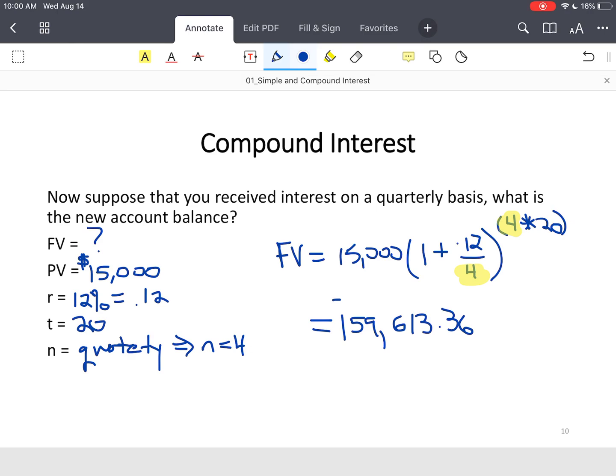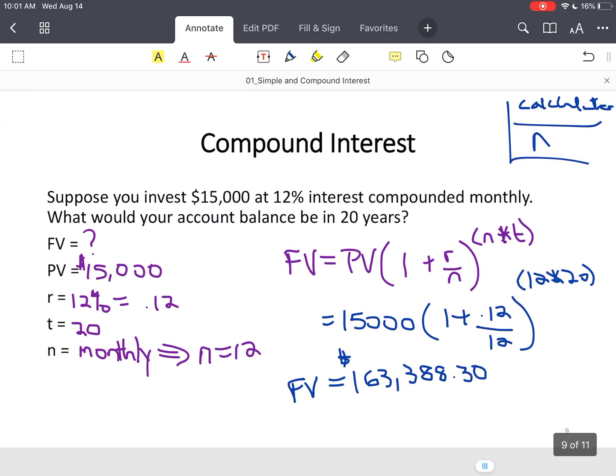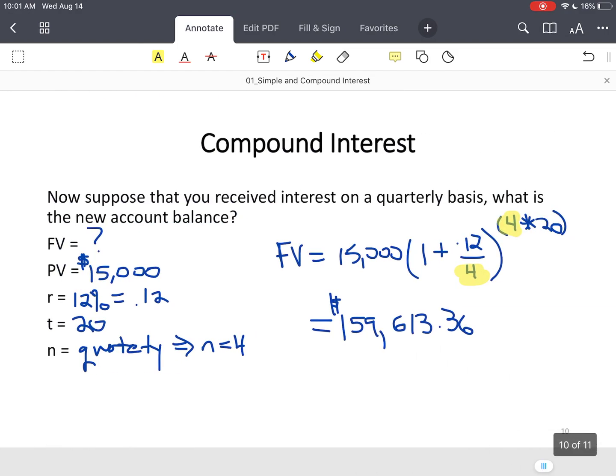And the new balance would be $159,613.36. We'll round it to the nearest hundredth, since we're talking about money. So, when you look at those two answers, don't get caught just substituting values and getting output. Make sure you look at what's actually happening. Notice, when you went to get interest on a quarterly basis, that's almost a $4,000 difference. So notice, the more compounding periods you have or you get, the more interest you earn. That's a fundamental principle that you have to understand about compounding interest, particularly as it relates to compounding periods.